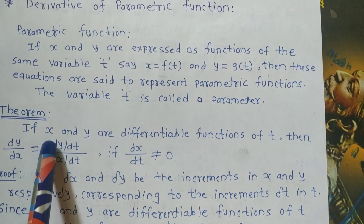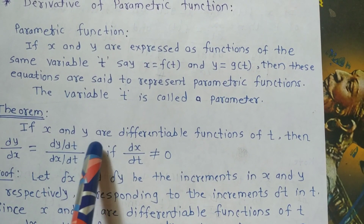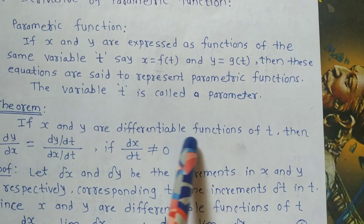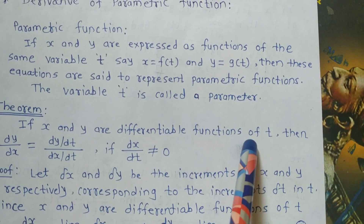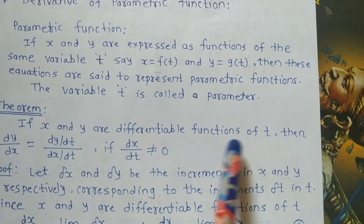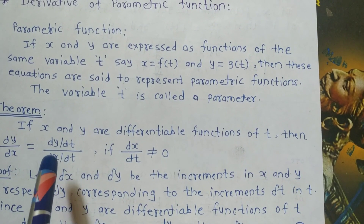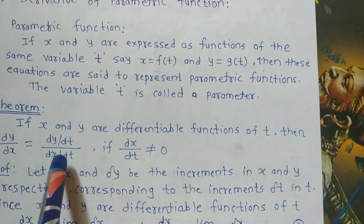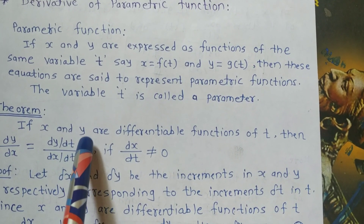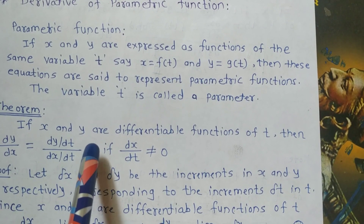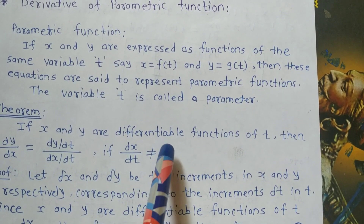That means, if x and y are differentiable functions of t, then dx upon dt and dy upon dt are both given, and we have dy upon dx equal to dy upon dt upon dx upon dt.